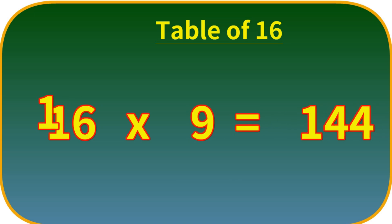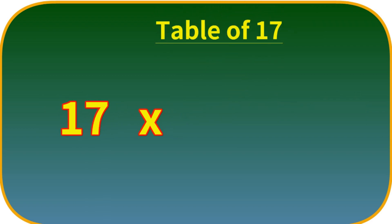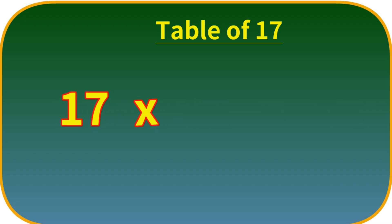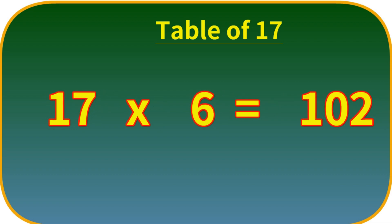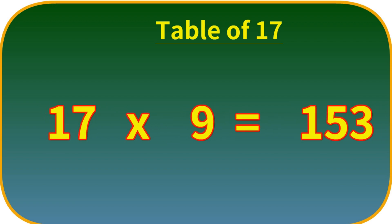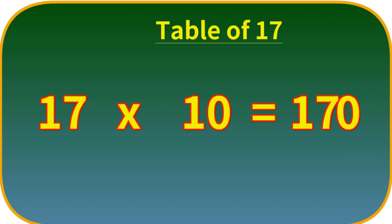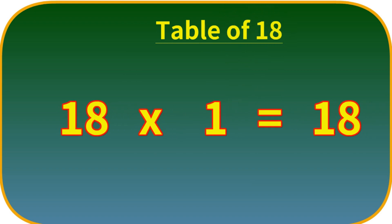16 tens are 160. Table of 17. 17 ones are 17. 17 twos are 34. 17 threes are 51. 17 fours are 68. 17 fives are 85. 17 sixes are 102. 17 sevens are 119. 17 eights are 136. 17 nines are 153. 17 tens are 170.